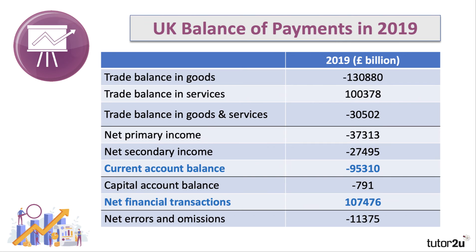So the UK is, in that sense, in a favourable position. It's not necessarily good news to run a large current account deficit — though it does depend on the causes. But in 2019, the UK was able to finance its current account deficit by being a net importer of capital, essentially borrowing money from overseas investors.